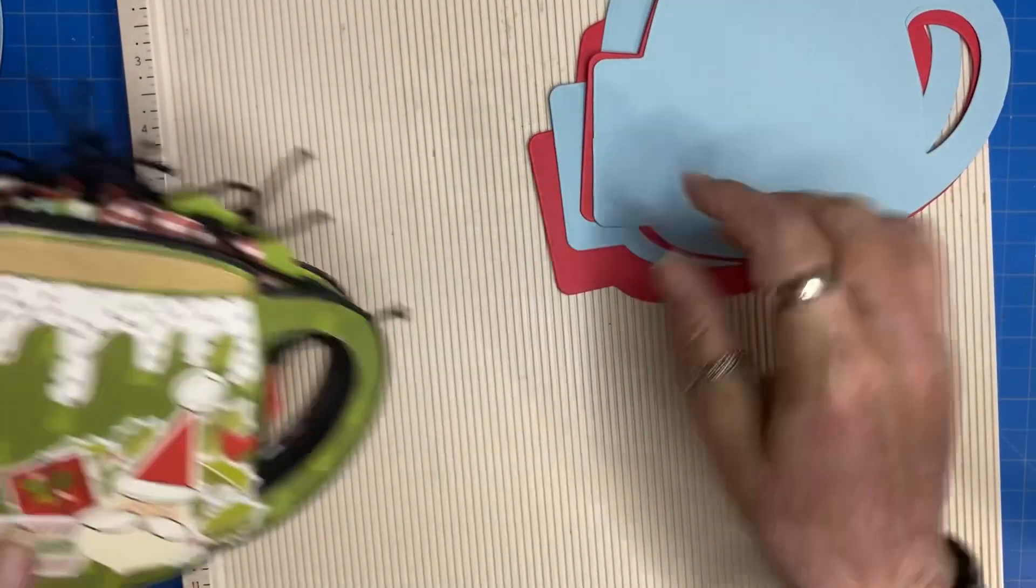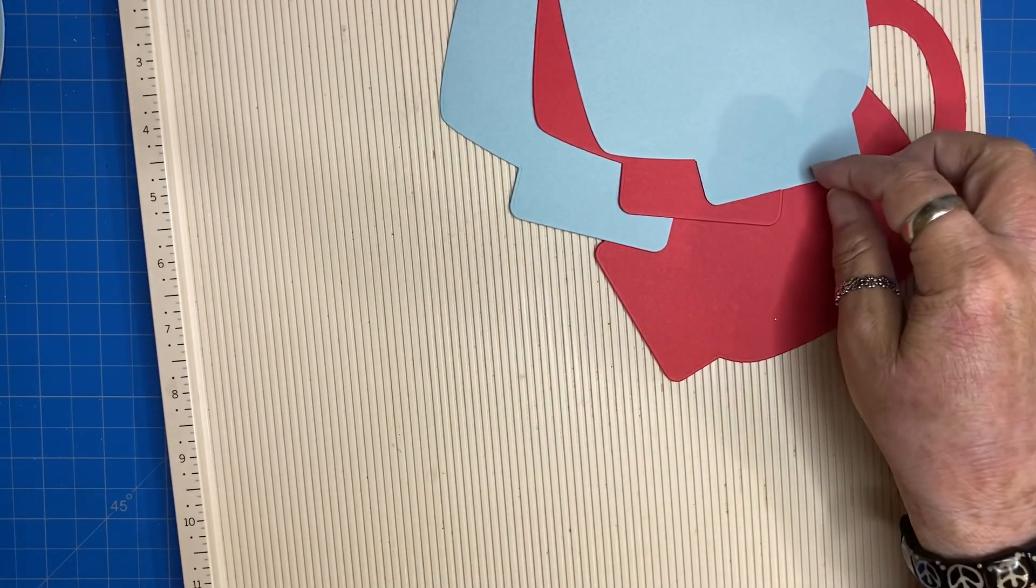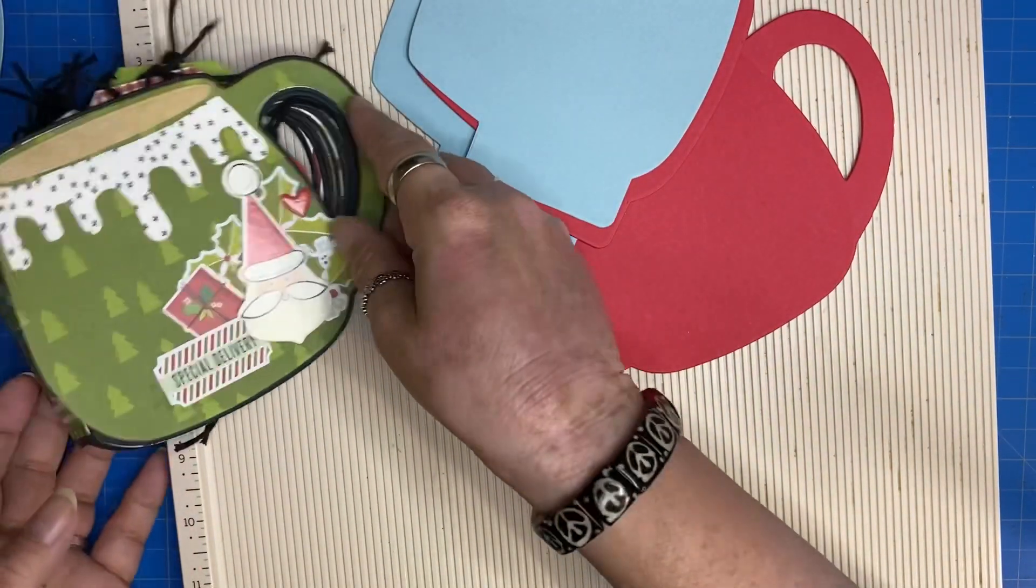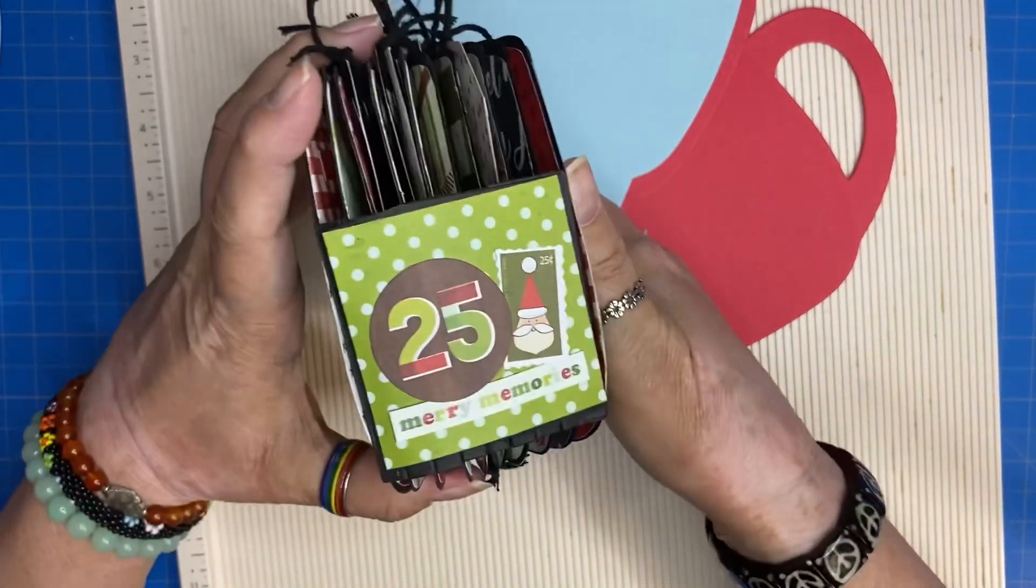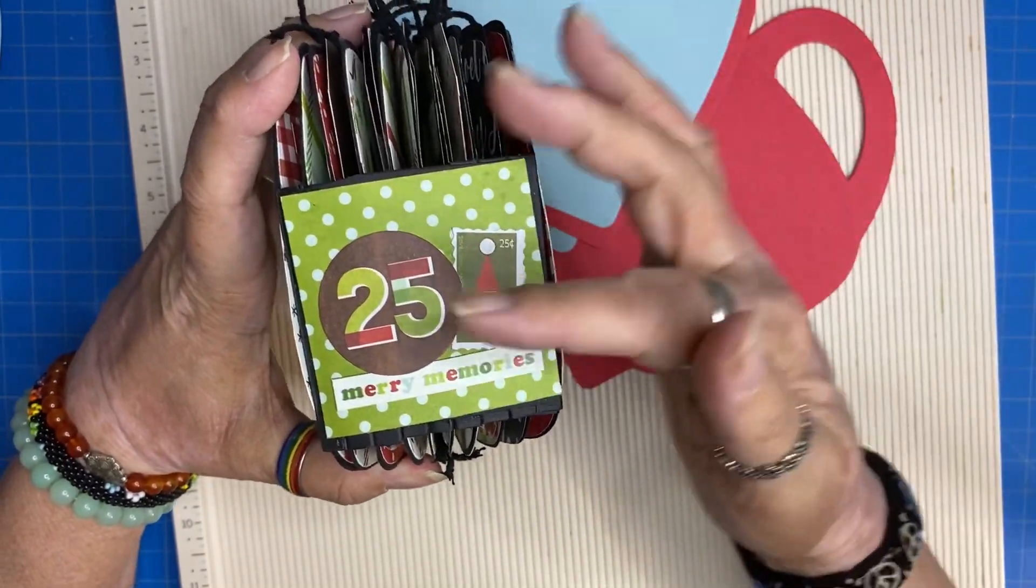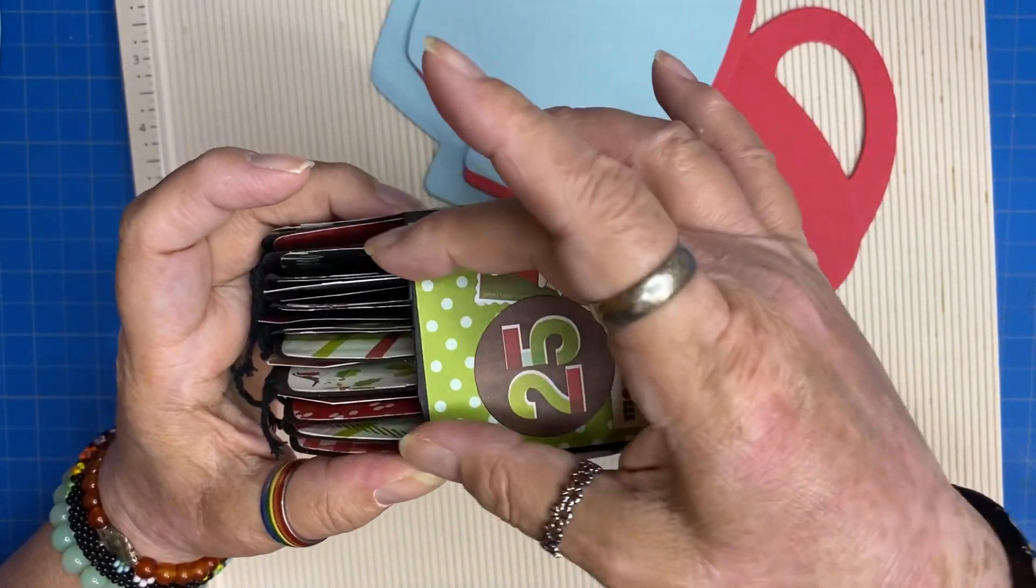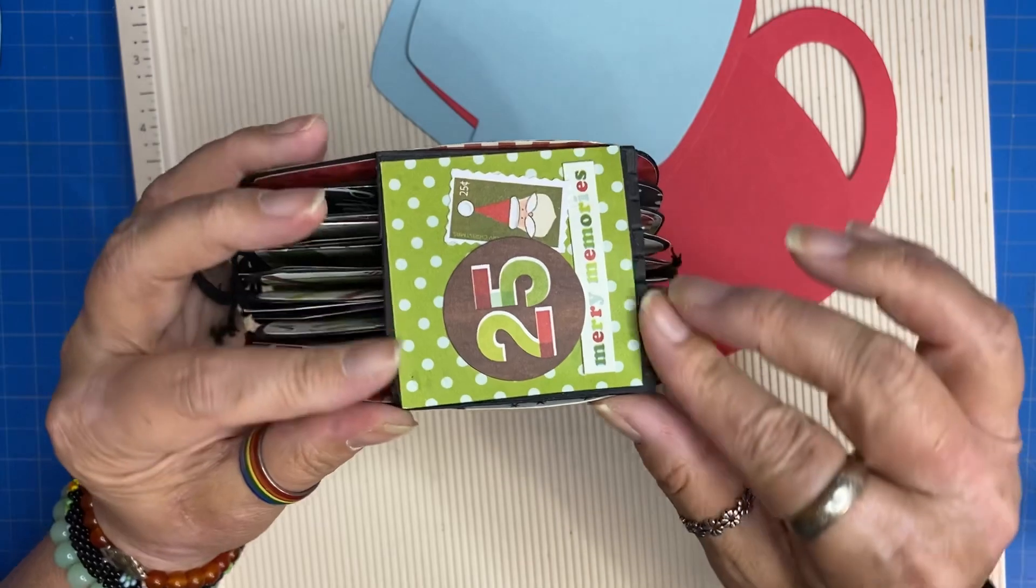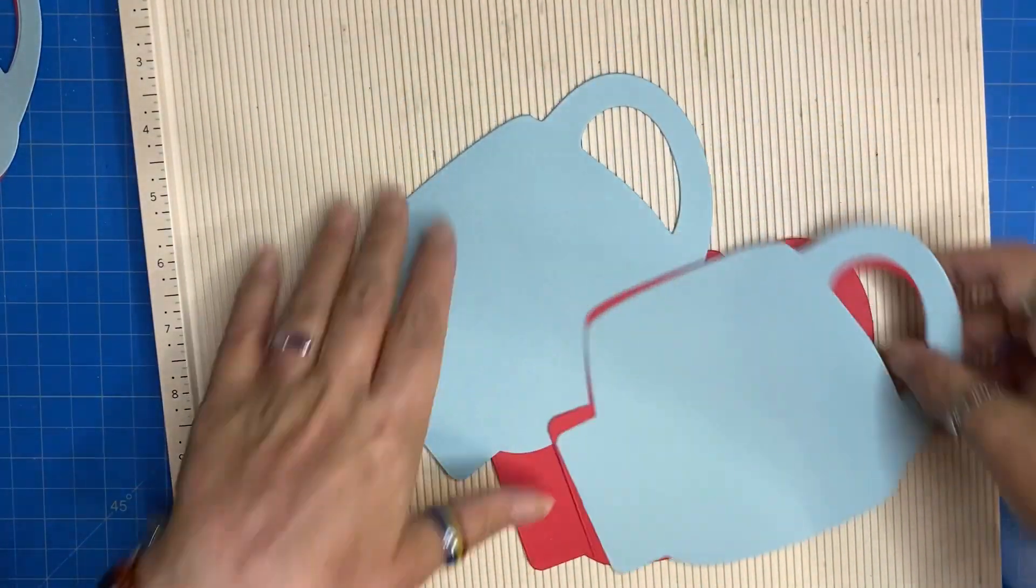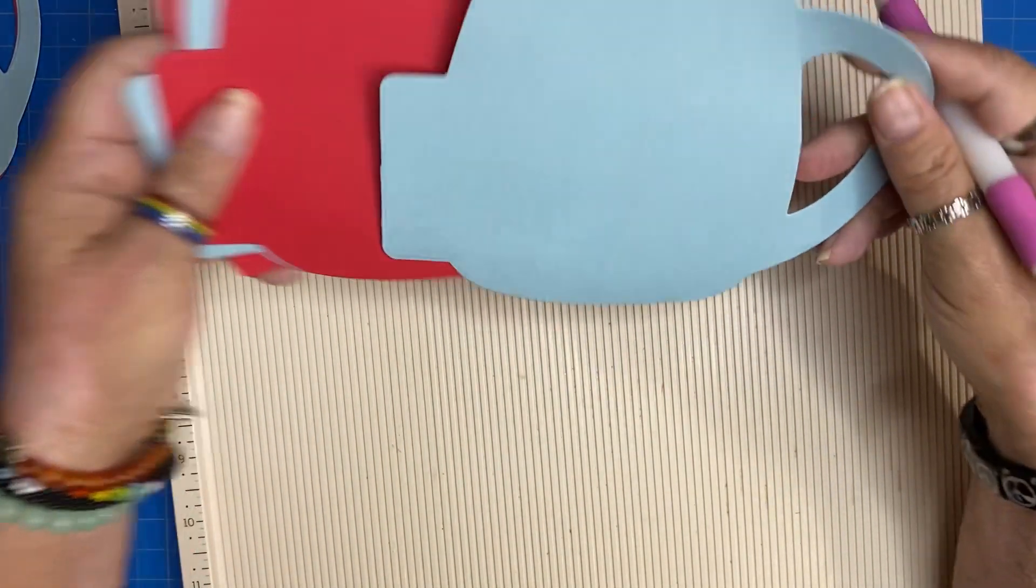Basically instead of punching holes and using twine or ribbon or book rings, I just went ahead and folded them and created a little gusset with a tab and glued them together.